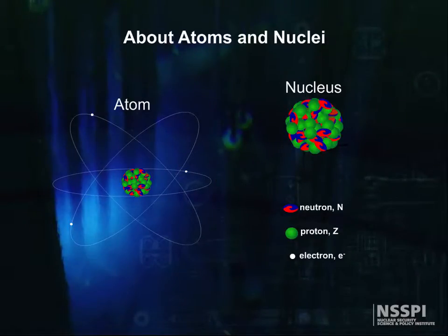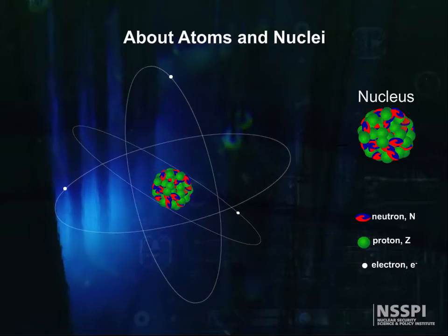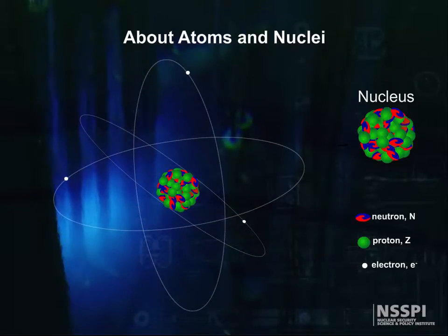Now let's look at how atoms are put together, because you need to have a good picture of this when we start talking about detecting radiation. An atom has a nucleus, and this nucleus is surrounded by the same number of electrons as there are protons in the nucleus.